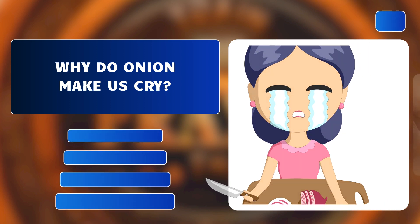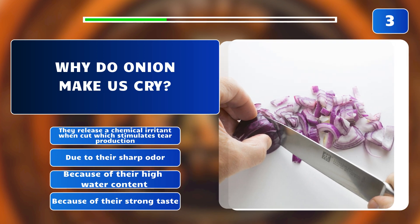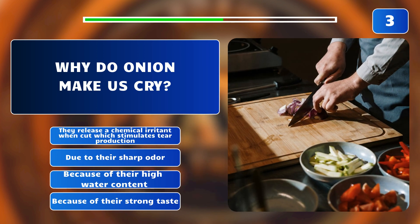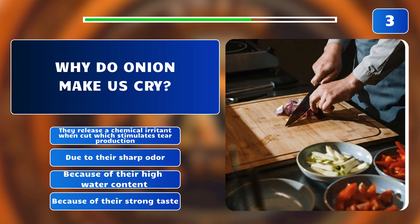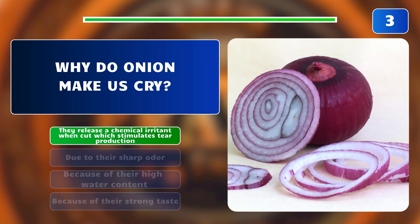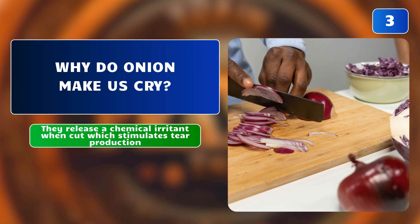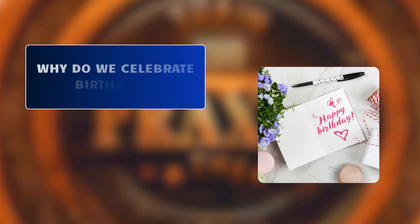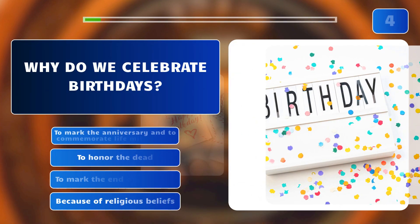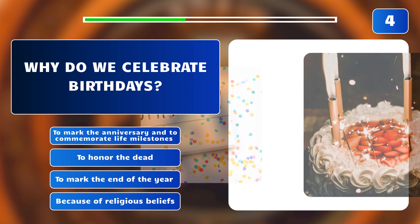Why do onions make us cry? They release a chemical irritant when cut, which stimulates tear production — or is it due to their sharp odor, their high water content, or their strong taste? The answer is: they release a chemical irritant when cut, which stimulates tear production.